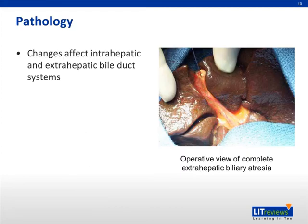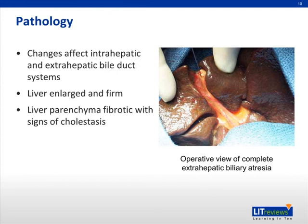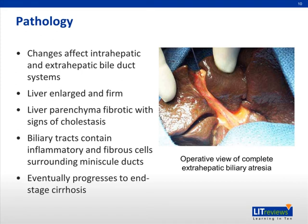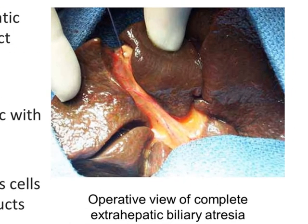The changes of biliary atresia affect both intrahepatic and extrahepatic bile duct systems. On gross examination, the liver is enlarged and firm, with fibrotic parenchyma and signs of cholestasis. On histologic exam, biliary tracts contain inflammatory and fiber cells surrounded by miniscule ducts. The disease eventually progresses to end-stage cirrhosis. The following image demonstrates an operative view of complete extrahepatic biliary atresia.